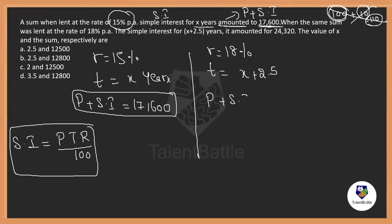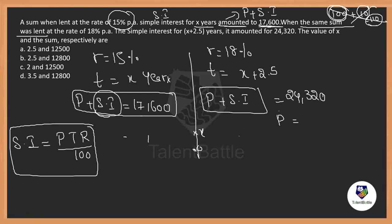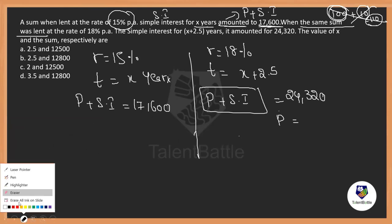Similarly, for the second case, Principal + SI = 24,320. The same sum is used in both cases, so the principal is the same. There are two unknowns: principal and time period X. We could equate principals or express one unknown in terms of the other, but that may be lengthy.